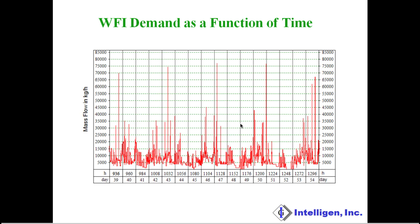This chart corresponds to a typical demand of a biopharmaceutical facility, and it corresponds to the instantaneous demand of WFI. As you can see, the demand varies with time, and there are certain peaks where a large demand of WFI is needed in the process. So since the demand of WFI varies greatly with time, the question is what value or values should we use to size the WFI system?